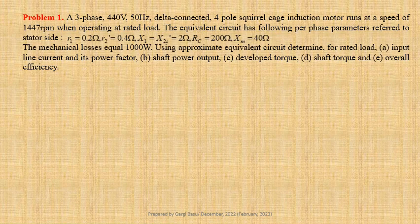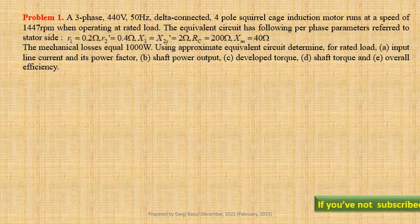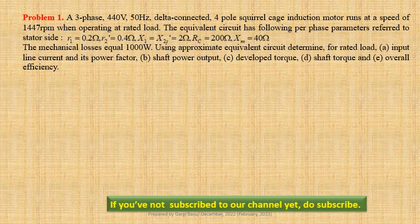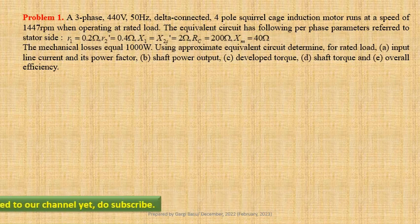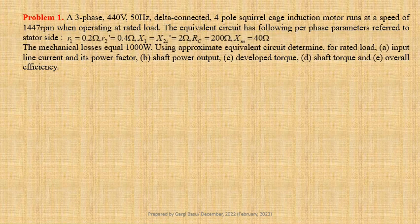A three-phase, 440 volts, 50 Hz, delta-connected, 4-pole squirrel-cage induction motor runs at a speed of 1447 revolutions per minute when operating at rated load. The equivalent circuit has the following per-phase parameters referred to the stator side: R1 = 0.2 Ω, R2' = 0.4 Ω, X1 = X2S' = 2 Ω, Rc = 200 Ω, and Xm = 40 Ω. The mechanical losses equal 1000 watts.